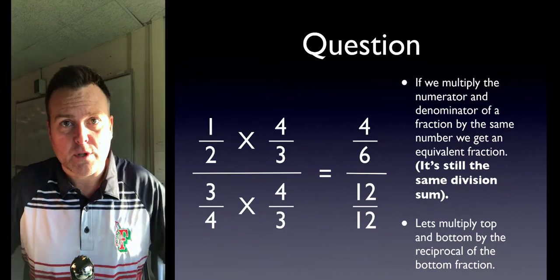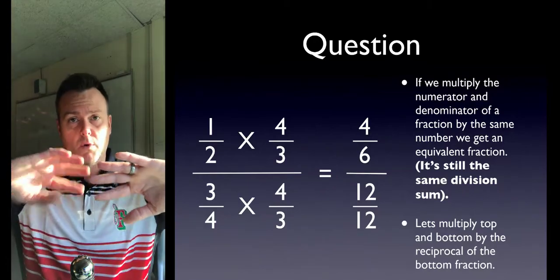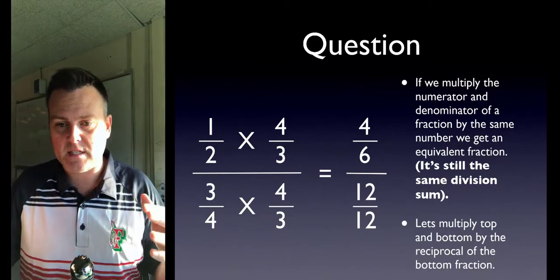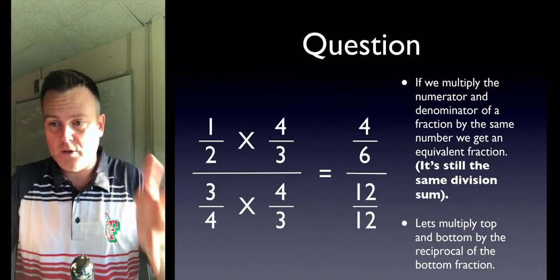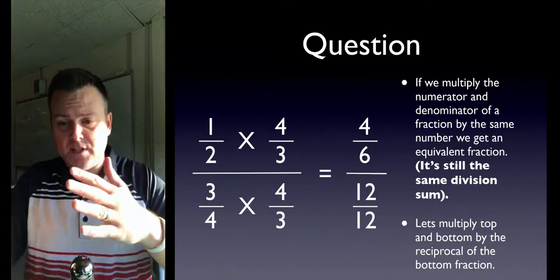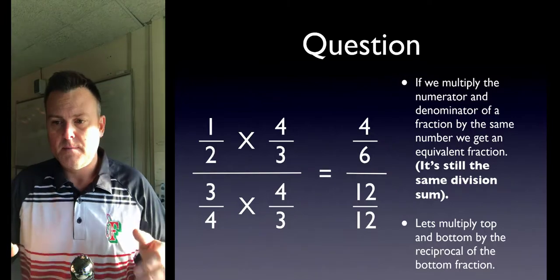The only way to get your denominator to be one is to multiply by the reciprocal. As you can see in this slide, we're going to multiply the numerator and the denominator by four-thirds, and then we're going to get an equivalent fraction.